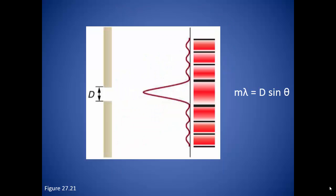The dark fringes can be described by the equation: M times the wavelength equals capital D times the sine of theta, where capital D is the width of the single slit, theta is the angle of diffraction, and M is the order of the fringe.